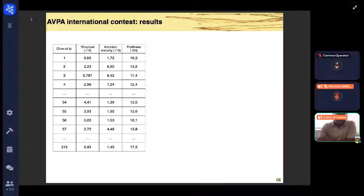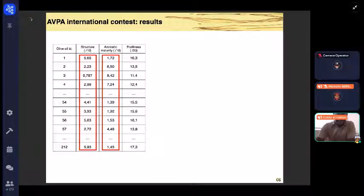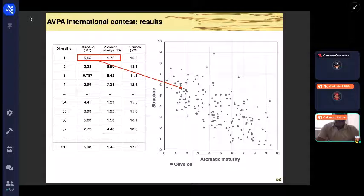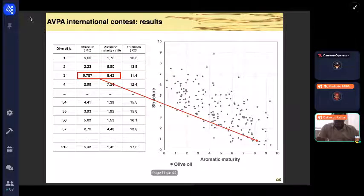At the end of the testing, each olive oil has three scores, which is a transcription of the testers' sensations: a structure score, a maturity score, and a fruitiness harmony score. As Cathy has already said, in general, the structure score is represented as a function of the maturity score in a 2D plane. Each olive oil is represented in this plane, like this one, or this one, and this one.